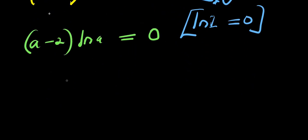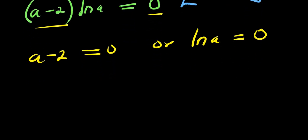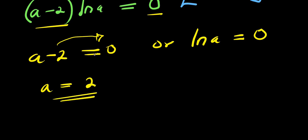At this point, we can easily find two different solutions. Either a minus 2 equals 0, or ln(a) equals 0. If a minus 2 equals 0, moving the negative 2 across the equality sign gives a equals 2. This is the same solution we found earlier by inspection — this is a₁ equals 2.